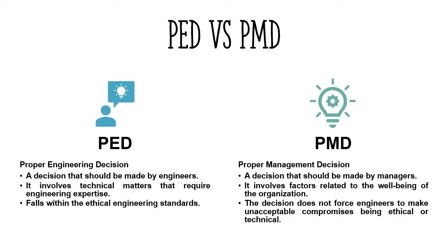Based on those two definitions we can identify two types of organizational decisions: proper engineering decisions or PEDs, and proper management decisions or PMDs. PEDs are decisions that should only be made by certified engineers because they involve technical decision making and engineering knowledge, and they should always fall within ethical engineering standards. PMDs are decisions made by managers to ensure the well-being of the organization, and they should not force engineers to compromise their ethical and professional integrity.